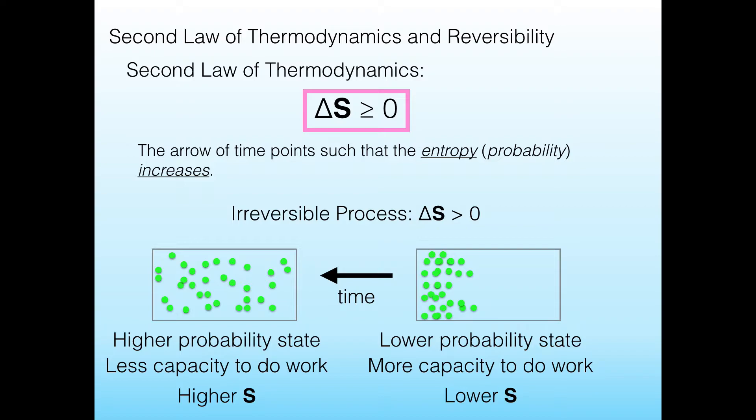And since S is higher at the end, then delta S must be greater than zero. This process is an irreversible process. And you can think about it like this. These molecules are never spontaneously going to go back to the one side of the box. And so that means that this process has to be irreversible. It's not going to just happen like that and flow that way over time.